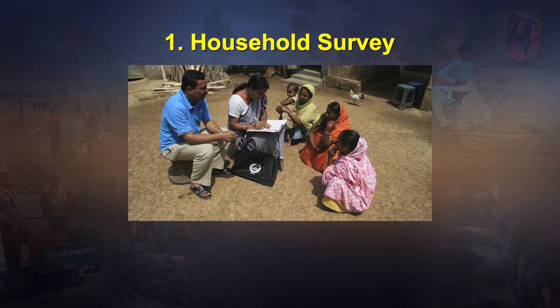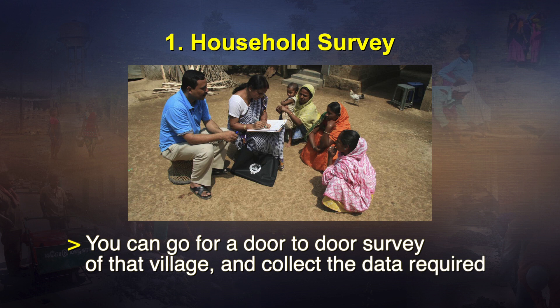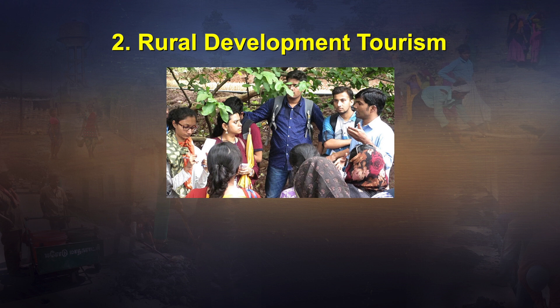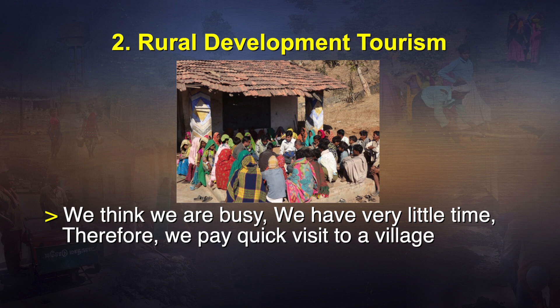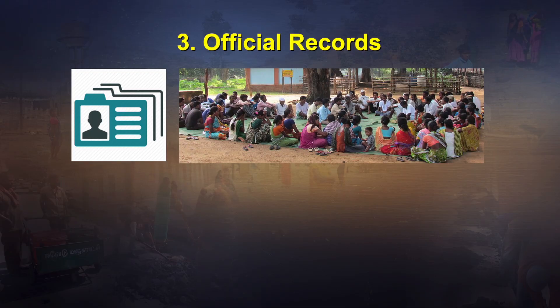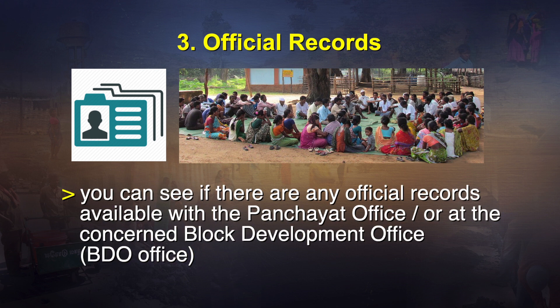There are several sources of data. One can be a household survey — you can go door-to-door and collect the required data. Number two is rural development tourism: we think we are busy and have very little time, so we pay a quick visit to a village, talk to a few people, get some impressions, and try to plan from that. The third way is from official records, such as those available with the Gram Panchayat or the Block Development Office.